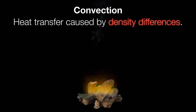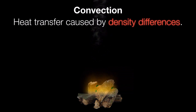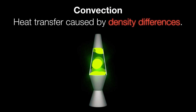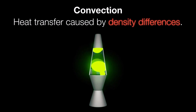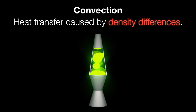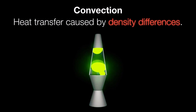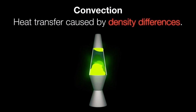Everyone's familiar with the expression "hot air rises," and that is what we're talking about here. A good example is a campfire — the smoke above it rises straight up into the air because that air is less dense than the surrounding air due to its heat. Another example of convection would be a lava lamp. There's a light bulb in the bottom which heats the wax, causing it to become less dense and rise. When it gets to the top, it cools down and sinks back to the bottom, where the process repeats.